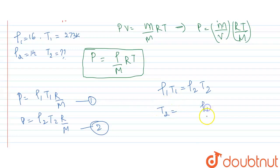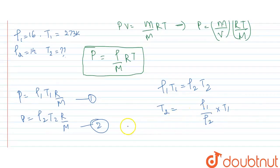To find T₂, we rearrange: T₂ equals ρ₁ over ρ₂ times T₁. Putting the values together, T₂ equals 16 over 14 times 273. This is the expression for T₂.